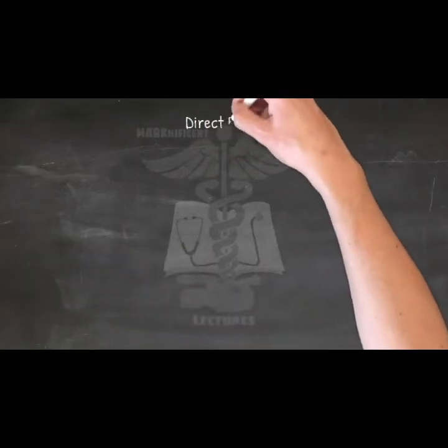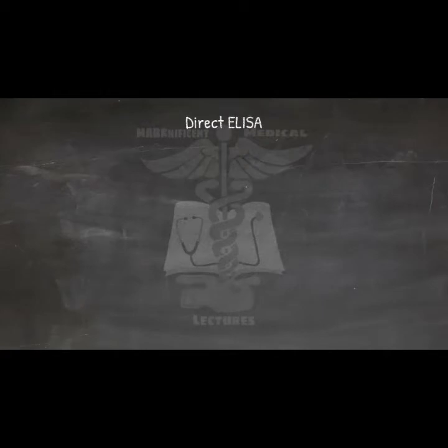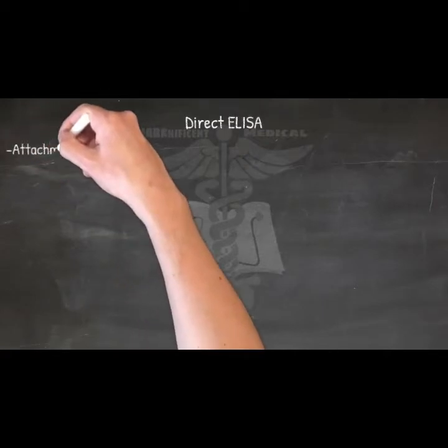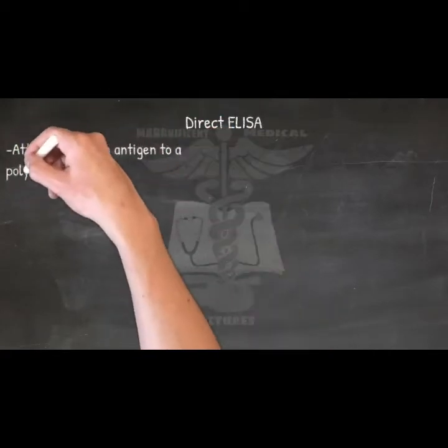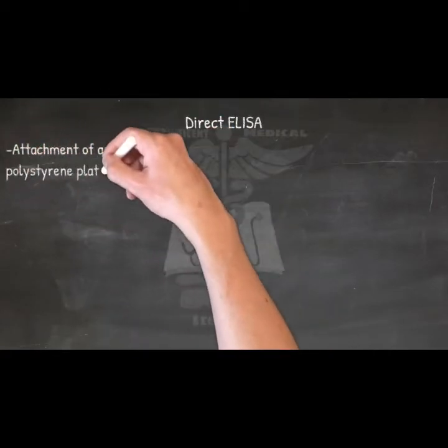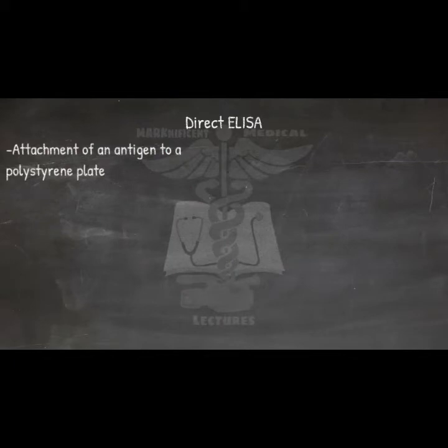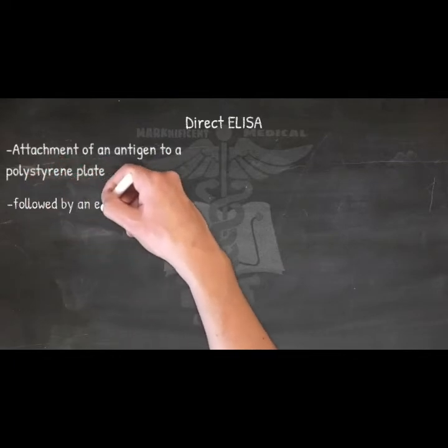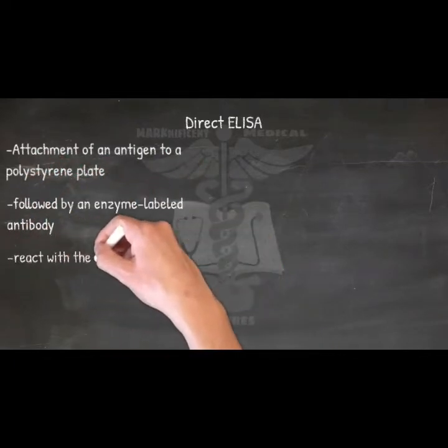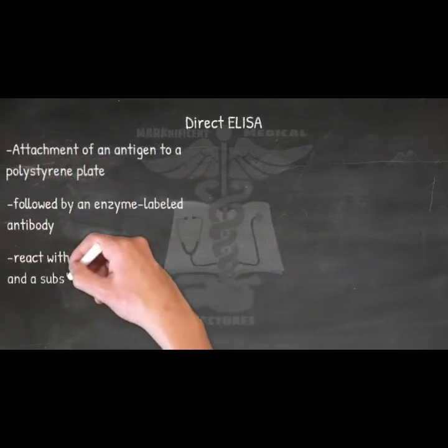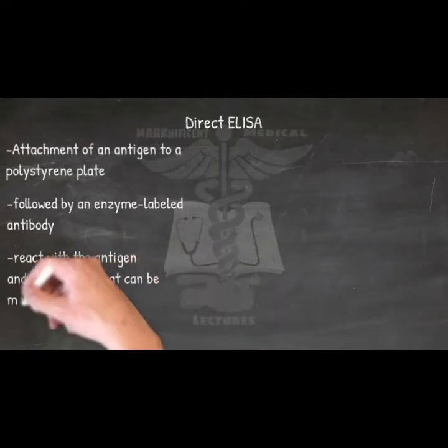Direct ELISA. This type involves attachment of an antigen to a polystyrene plate, followed by an enzyme-labeled antibody that can react with the antigen, and a substrate that can be measured.